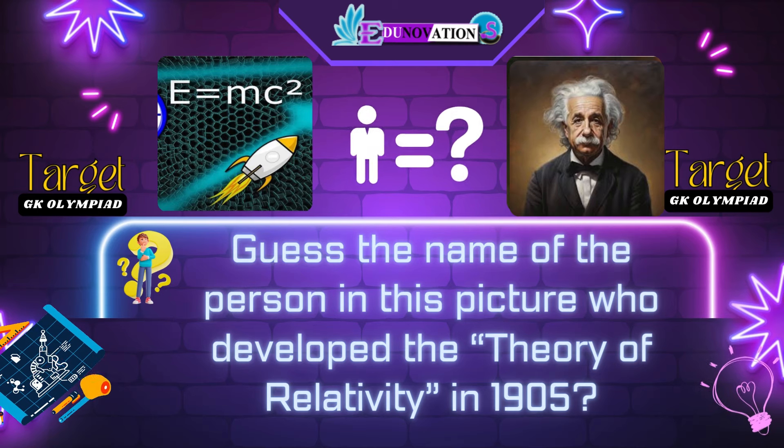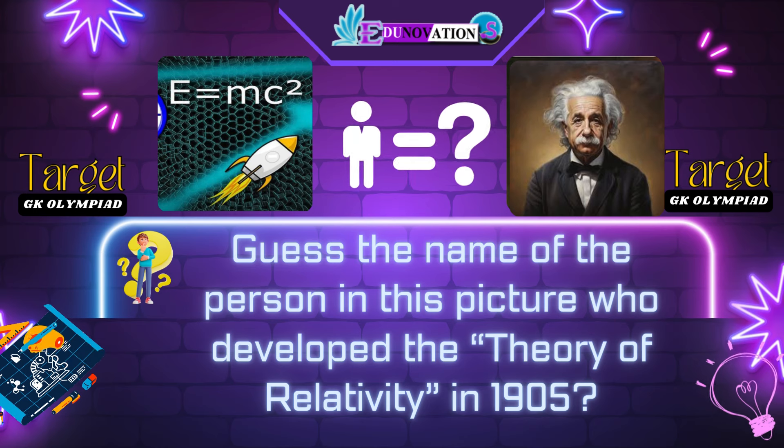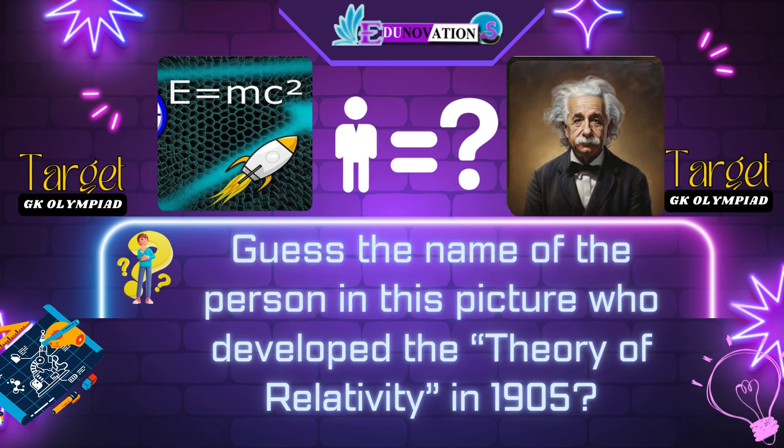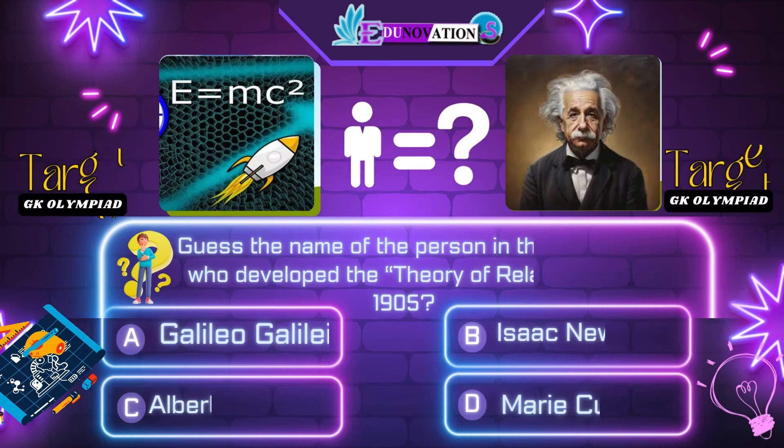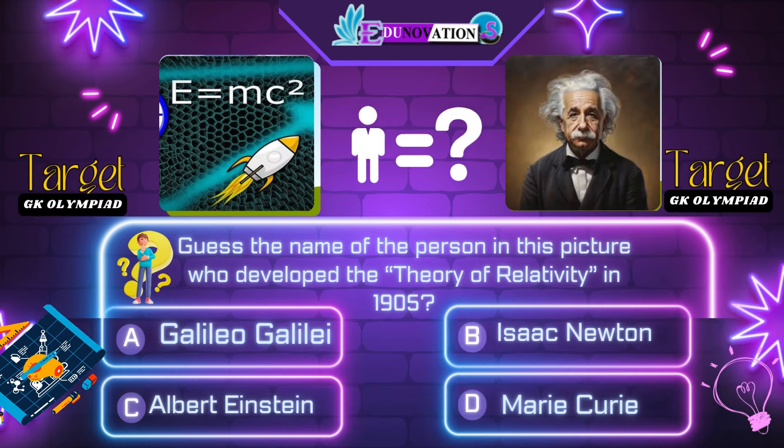Next question. Guess the name of the person in this picture who developed the theory of relativity in 1905. Your options are: A. Galileo Galilei, B. Isaac Newton, C. Albert Einstein, D. Marie Curie. Time's up. Correct answer is C. Albert Einstein.